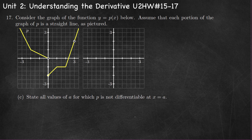Part C, state all values of a for which p is not differentiable — where the slope of the graph is undefined. We have a corner point, a jump discontinuity, another corner point, another corner point, and a discontinuity. So p is not differentiable at a equals negative two, a equals zero, a equals one, a equals two, and a equals three.